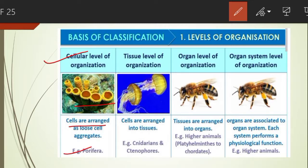So in the cellular level of organization, there are many cells arranged loosely — loose cell aggregates — but the cells do not combine or group to form tissues.